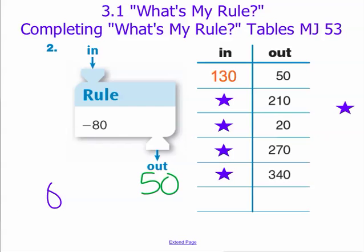We can check this problem by dropping 130 in as our input: 130 minus 80. Does that give us 50? Of course, absolutely.